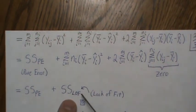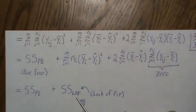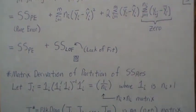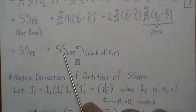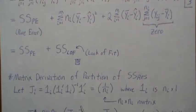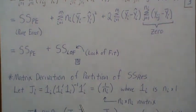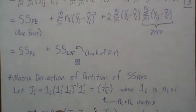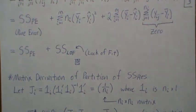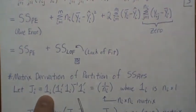In the next video we'll develop a test to see if the lack of fit is too large. But first I want to derive this in matrix notation for two reasons: it makes distributional properties much easier to derive, and understanding this block diagonal structure will help when we get to design of experiments, where design matrices and projection matrices can be complex.